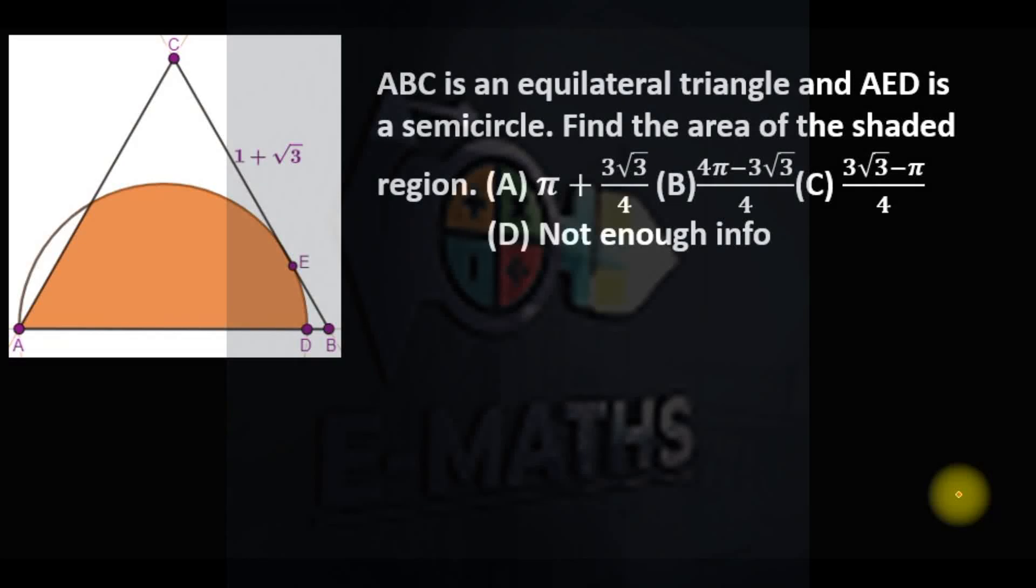Okay, we're asked to find the area of this shaded region if ABC is an equilateral triangle and AED is a semicircle. So what we have to do is locate the center of this semicircle.